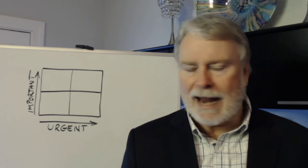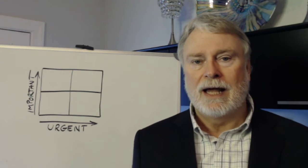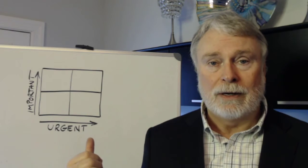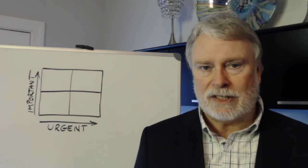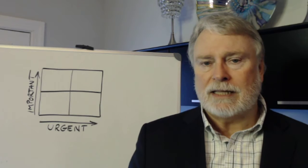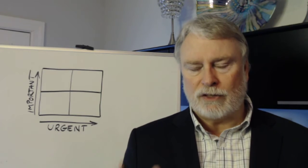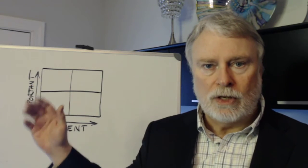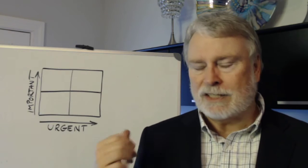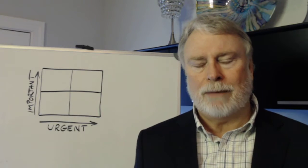Anytime I talk about prioritizing, I use the Eisenhower decision matrix. You've probably seen this before. Eisenhower said that he got a lot accomplished because he focused on things that were important or urgent. Stephen Covey took this and polished it up a little bit.